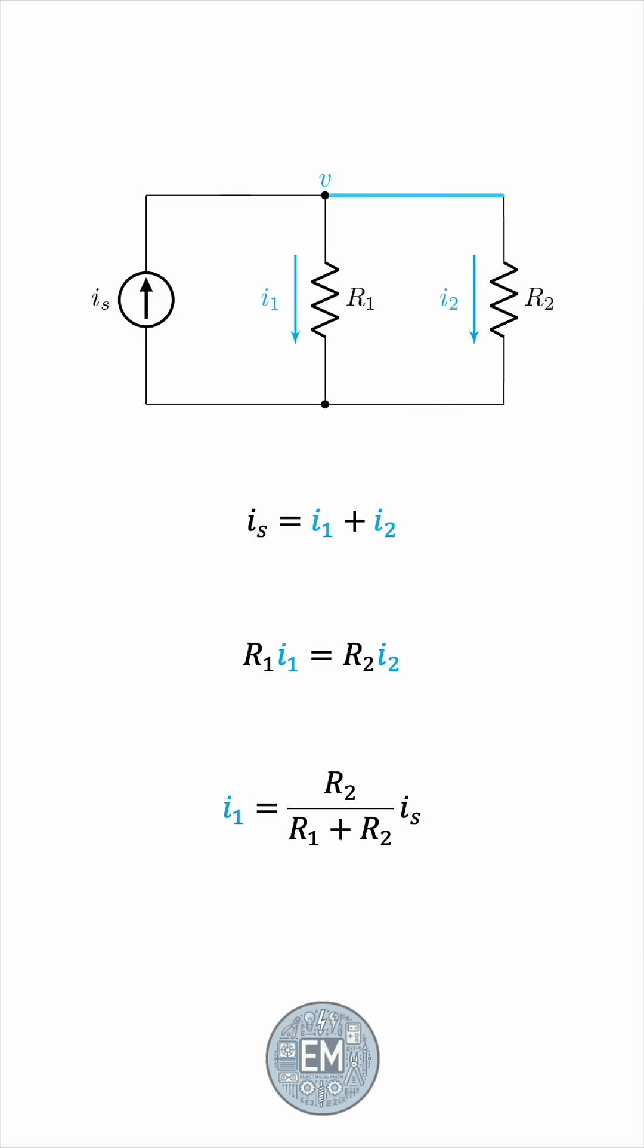the current through the R1 resistor, and I2 can be found very similarly. It is easy to verify that the sum of the two is indeed Is. Notice that the inverse proportion is apparent. Each current is obtained by dividing the other resistor by the sum of the two resistances, and therefore current indeed splits in inverse proportion to the resistances.